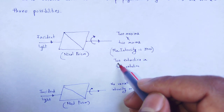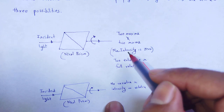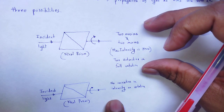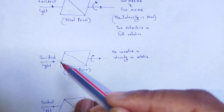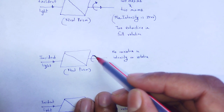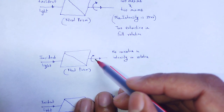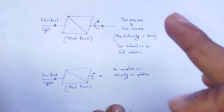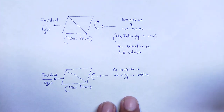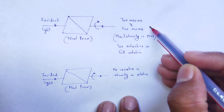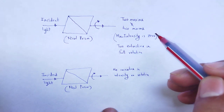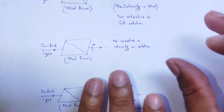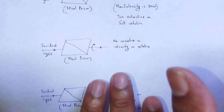In that full rotation, we see two extinctions — two maxima and two minima. That means there is variation in intensity. Next, when incident light passes through the Nicol prism and we rotate it through a full rotation, we see no variation in intensity. In the first case there will be variation in intensity — two maxima and two minima, minimum totally zero. But in case number two, there will be no such variation in intensity; the intensity remains constant.